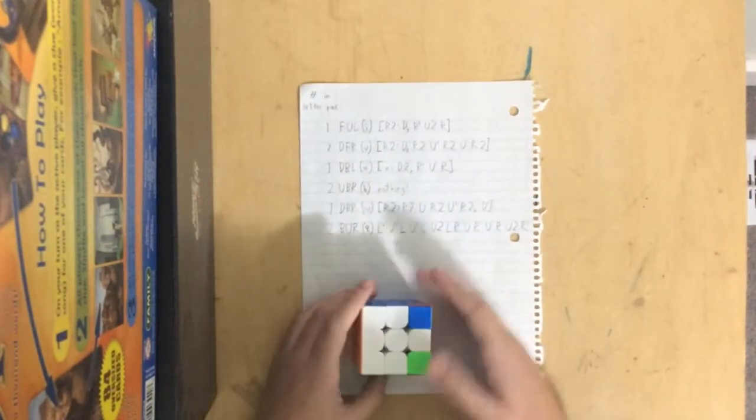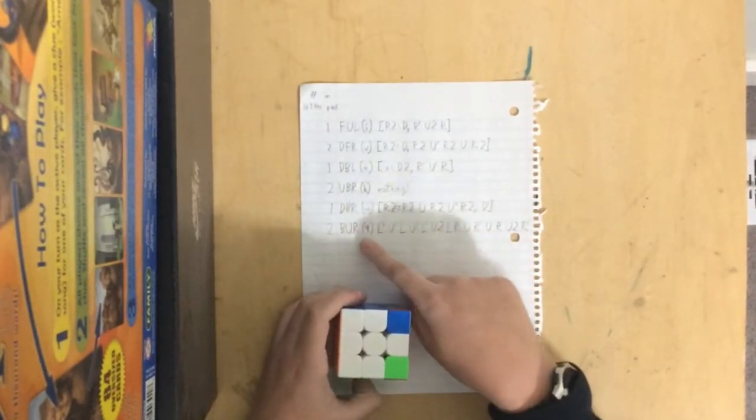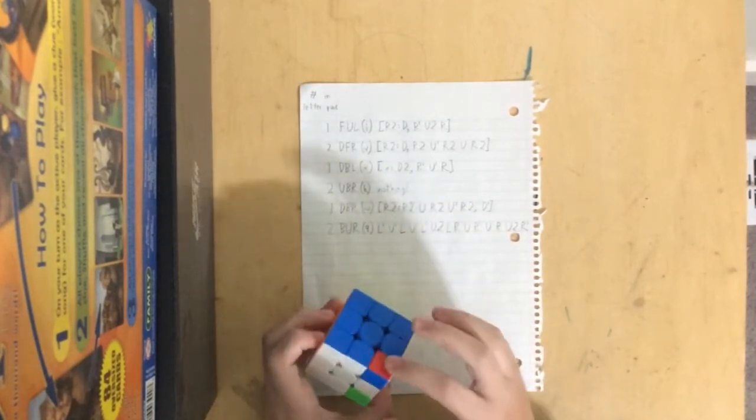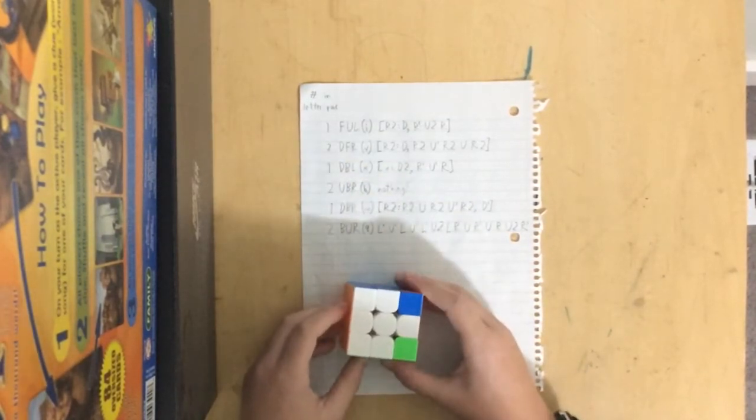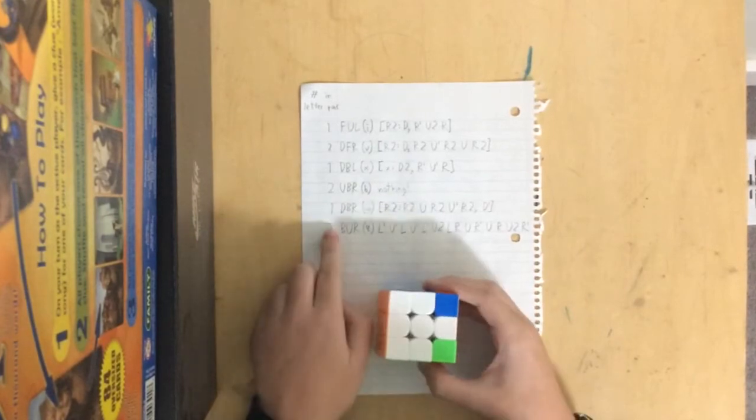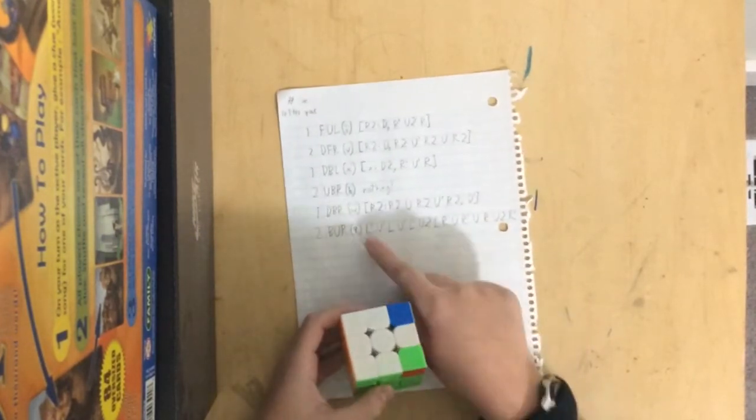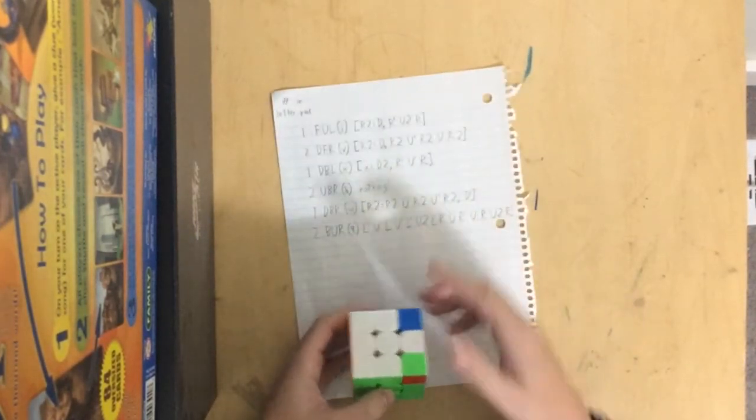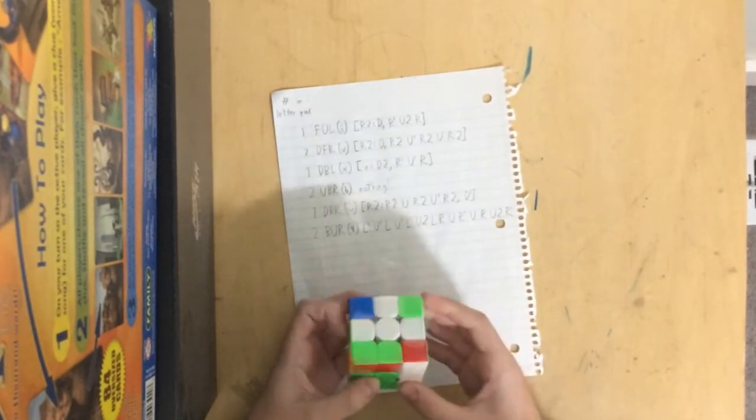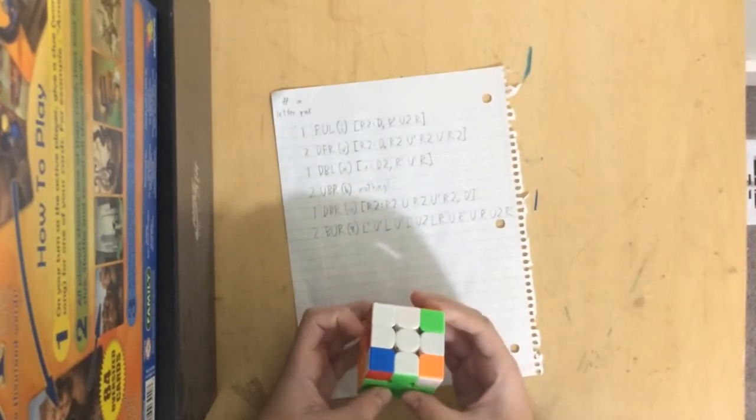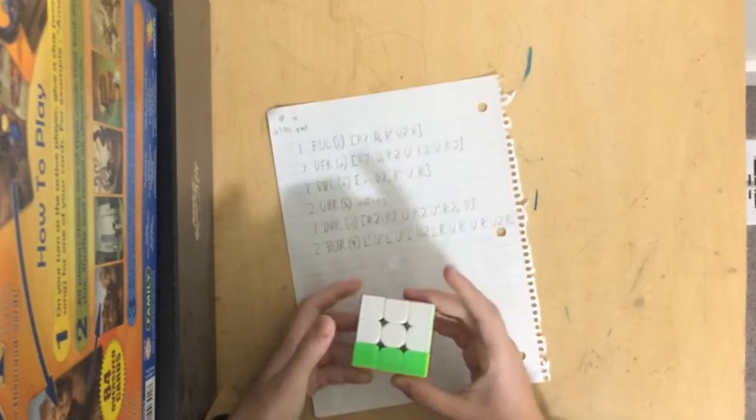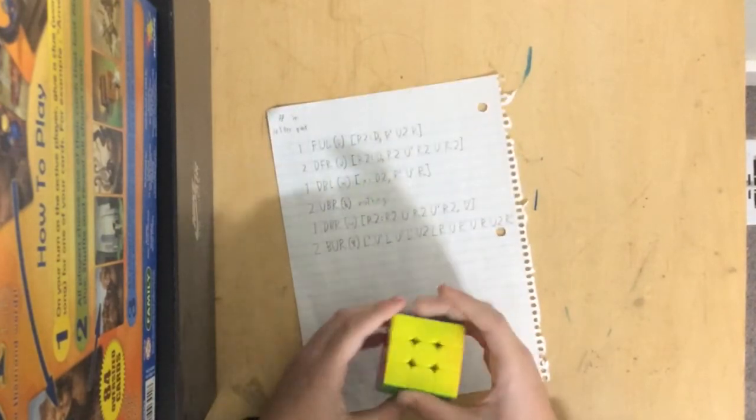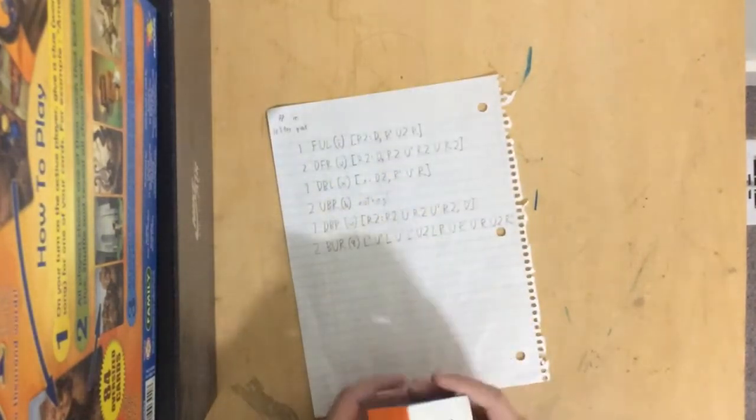And then the last one we have is second in the letter pair. It's Q, which is BUR, right here. And for this, it's second in the letter pair, so we do it reverse. So we just do this algorithm reverse. R, U2, R' U', R, U', R', R', L' U2, L, U, L', U, L. And that solved it.